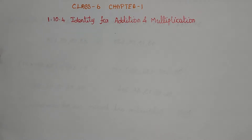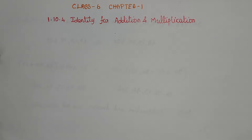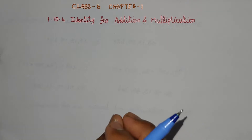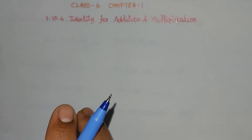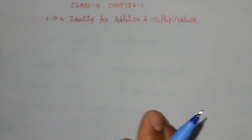Hello students, in this video we are going to learn Class 6 Chapter 1 Numbers, topic 1.10.4: Identity for Addition and Multiplication. This identity is a very simple concept.